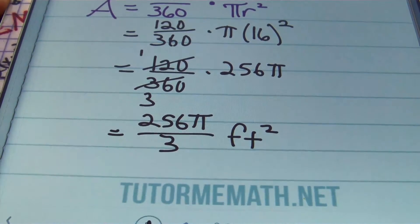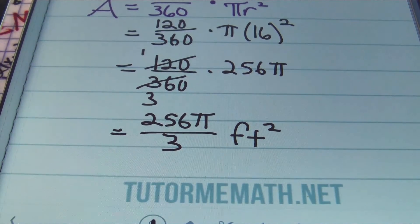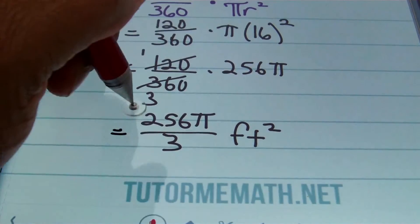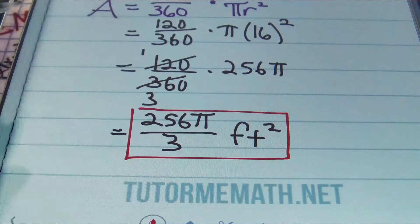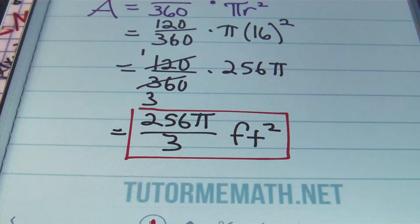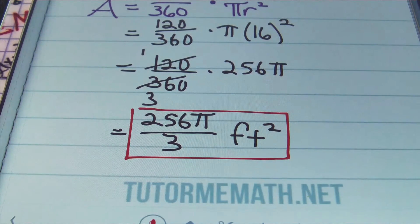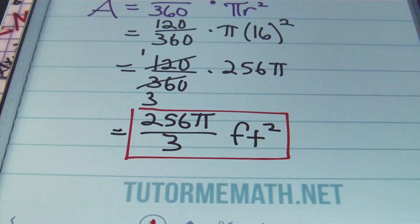Let's box that up. There's your result as an exact answer: 256π thirds square feet. If you need decimal notation, throw that in your calculator and press enter. That's problem number four.